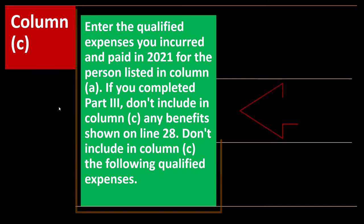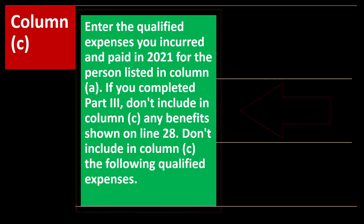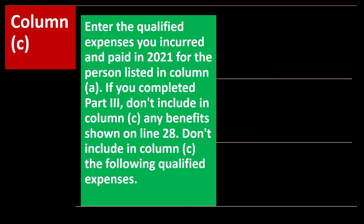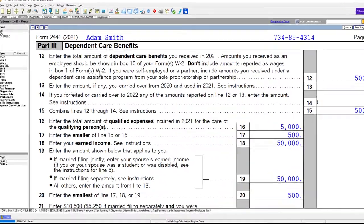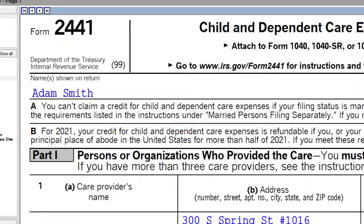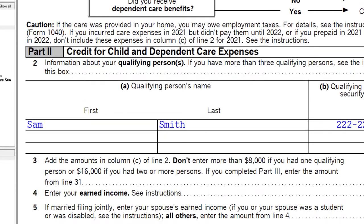Column C: enter the qualified expenses you incurred and paid in 2021 for the person listed in column A. If you completed Part 3, don't include in column C any benefits shown on line 28 — those are the dependent care benefits on page 2. We're focusing on Part 2, column C here.